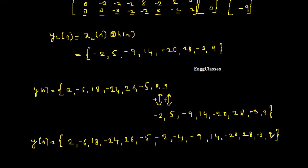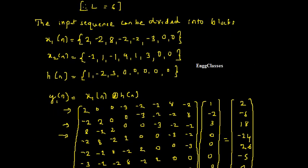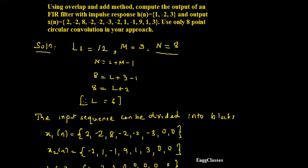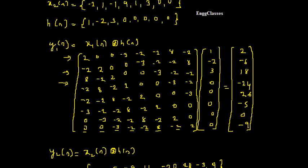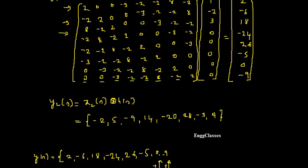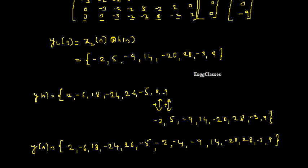This is the final output y[n] obtained using the overlap-add method. Hope you have understood — I solved everything step by step. If you have any doubts, please let me know in the comment section and I will address them. Subscribe to NG Classes for more videos on digital signal processing. Thank you everyone for watching.